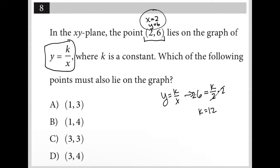k is a constant, which means k is always 12, which means my equation, y equals k over x, is really y equals 12 over x.